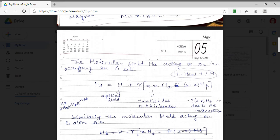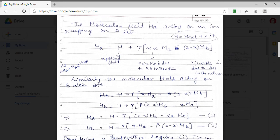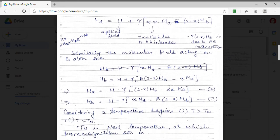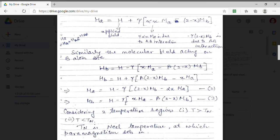This is the molecular field which acts on iron which occupy A site. Similarly we can express the molecular field acting on B site. So these two expressions will be the molecular field that act on A and B site.